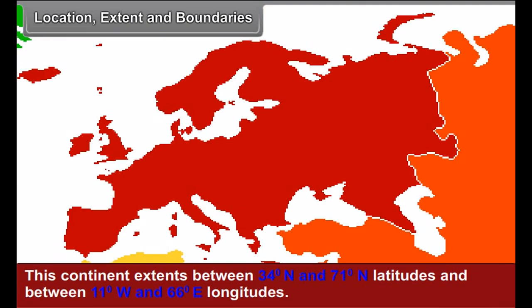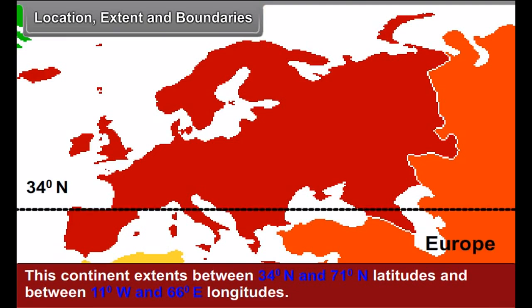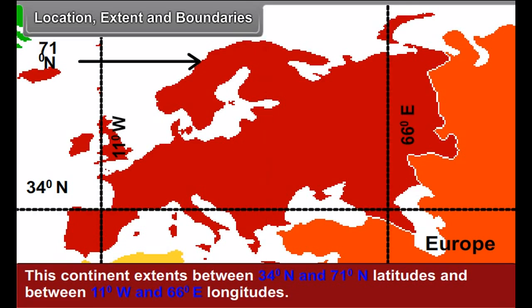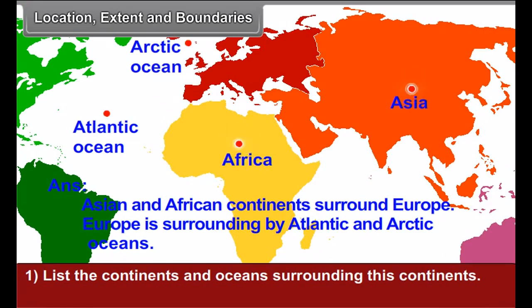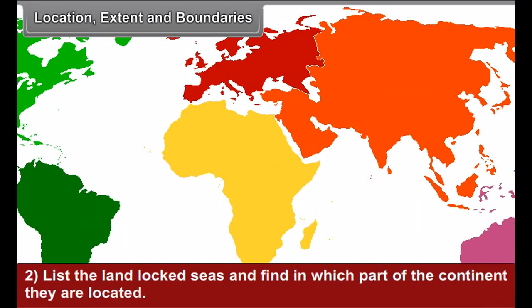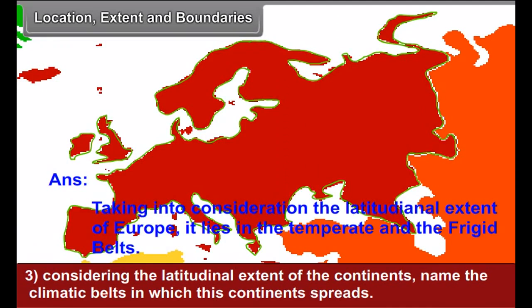Location, Extent and Boundaries. This continent extends between 34 degrees north and 71 degrees north latitudes and between 11 degrees west and 66 degrees east longitudes. See color figure 4 and answer the following: 1. List the continents and oceans surrounding this continent. 2. List the landlocked seas and find in which part of the continent they are located. 3. Considering the latitudinal extent of the continent, name the climatic belts in which this continent spreads.